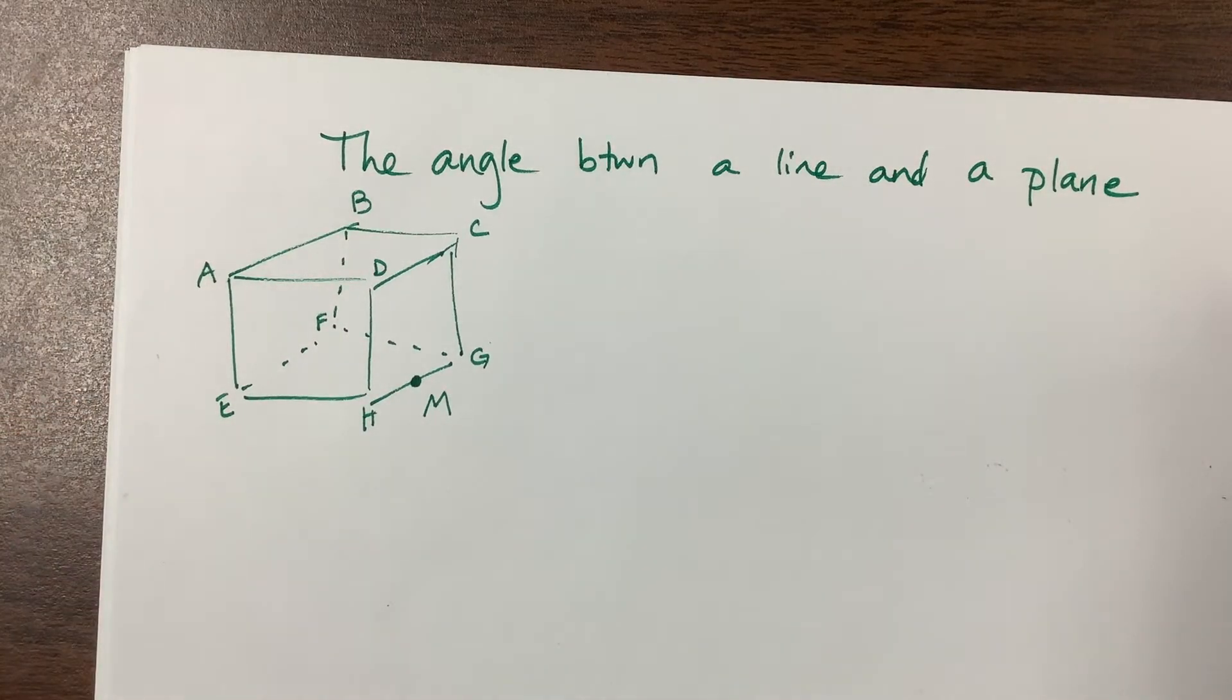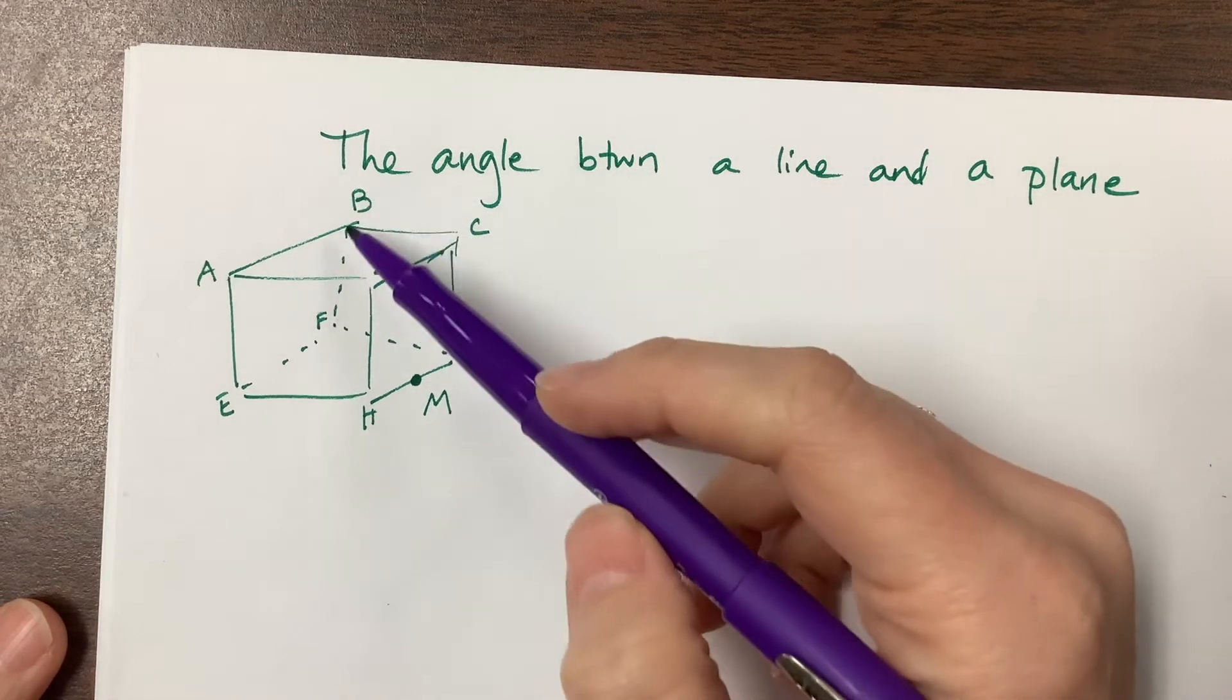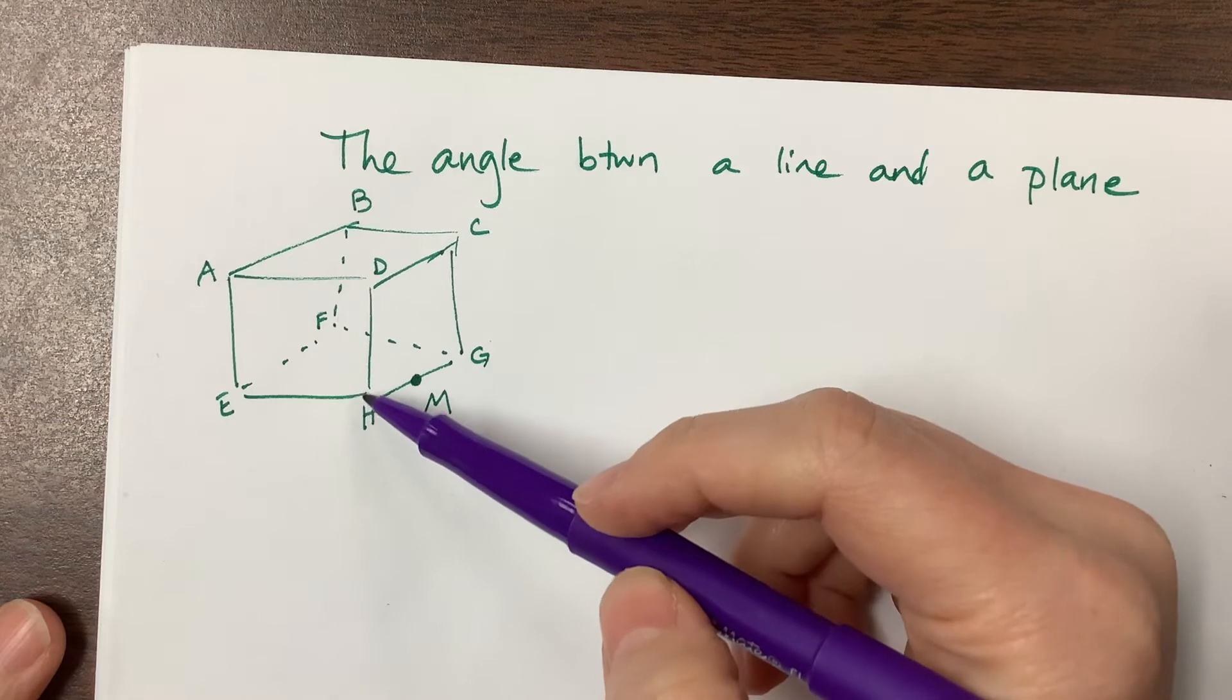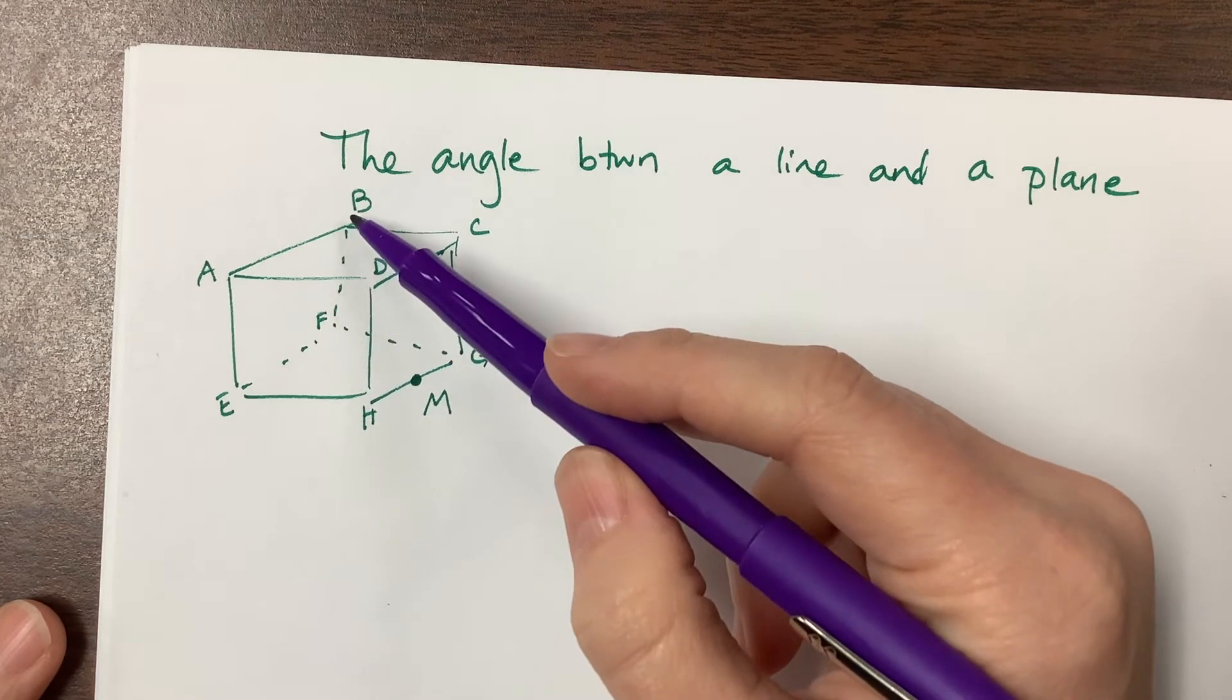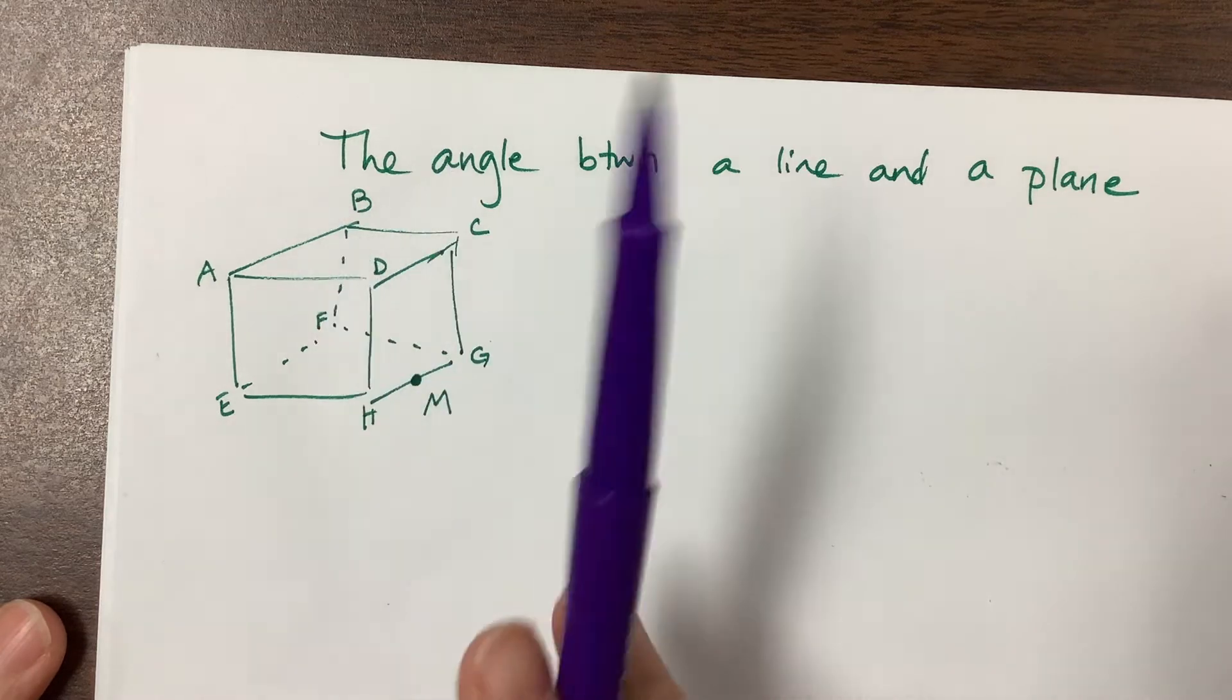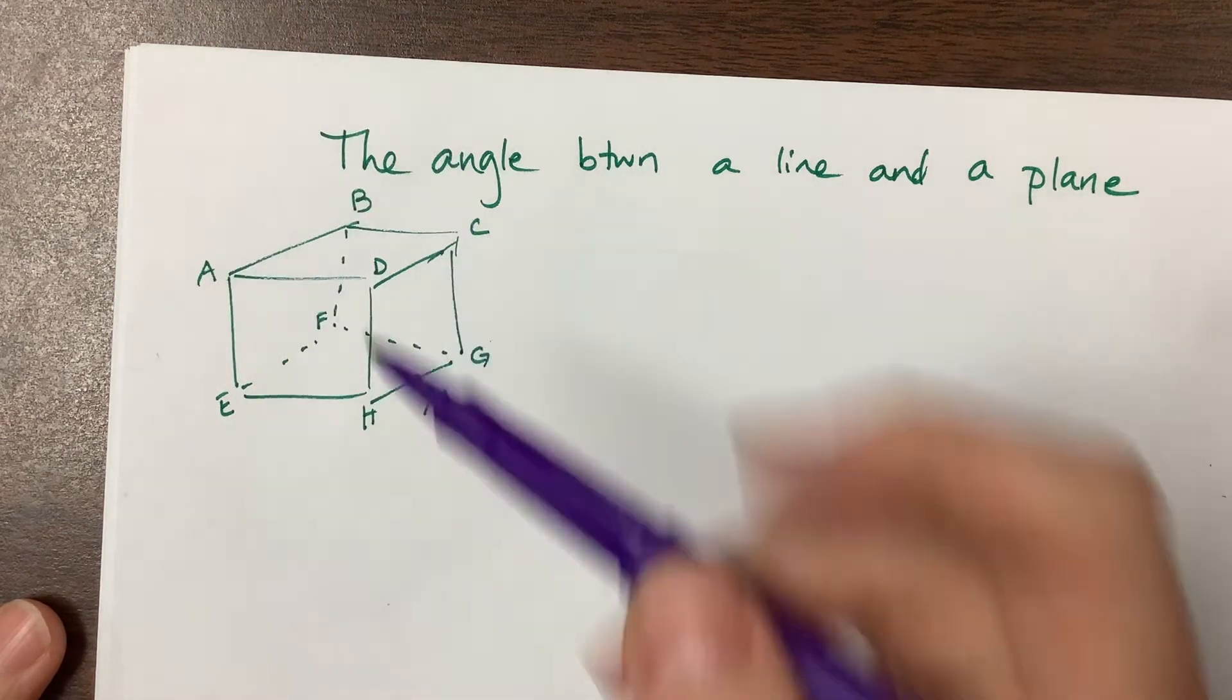So they might ask you to find the projection of the line into the plane. If they're looking at the projection of line BH into the plane, what they're talking about is: if this line landed flat onto the plane, what would that be?